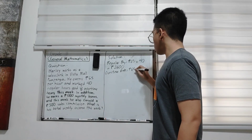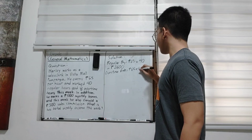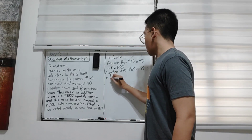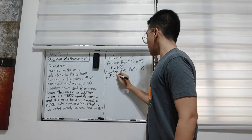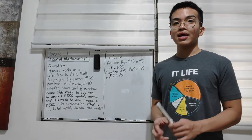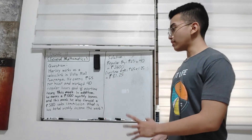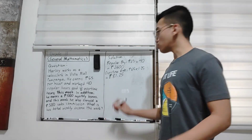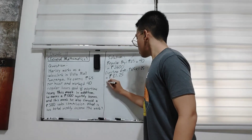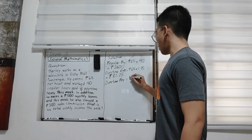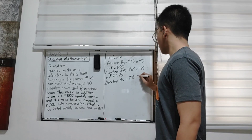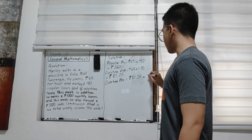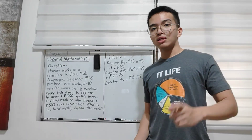...multiplied by 1.25, giving an overtime rate of 81.25 pesos per hour. We then get his total overtime pay: 81.25 pesos per hour multiplied by eight overtime hours.